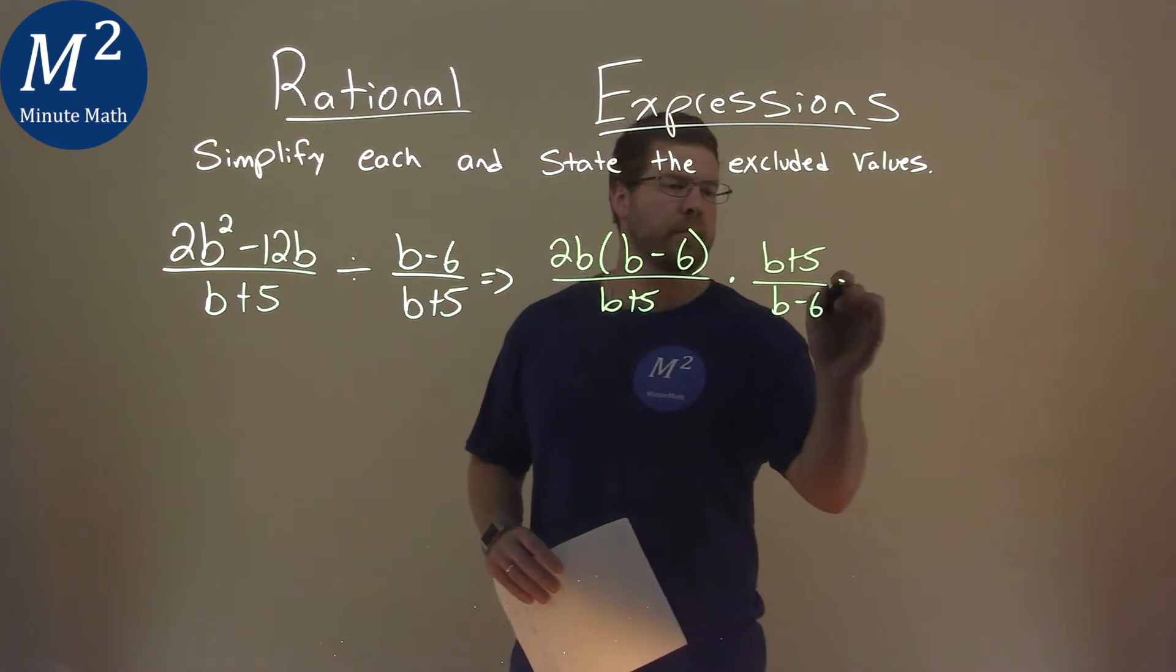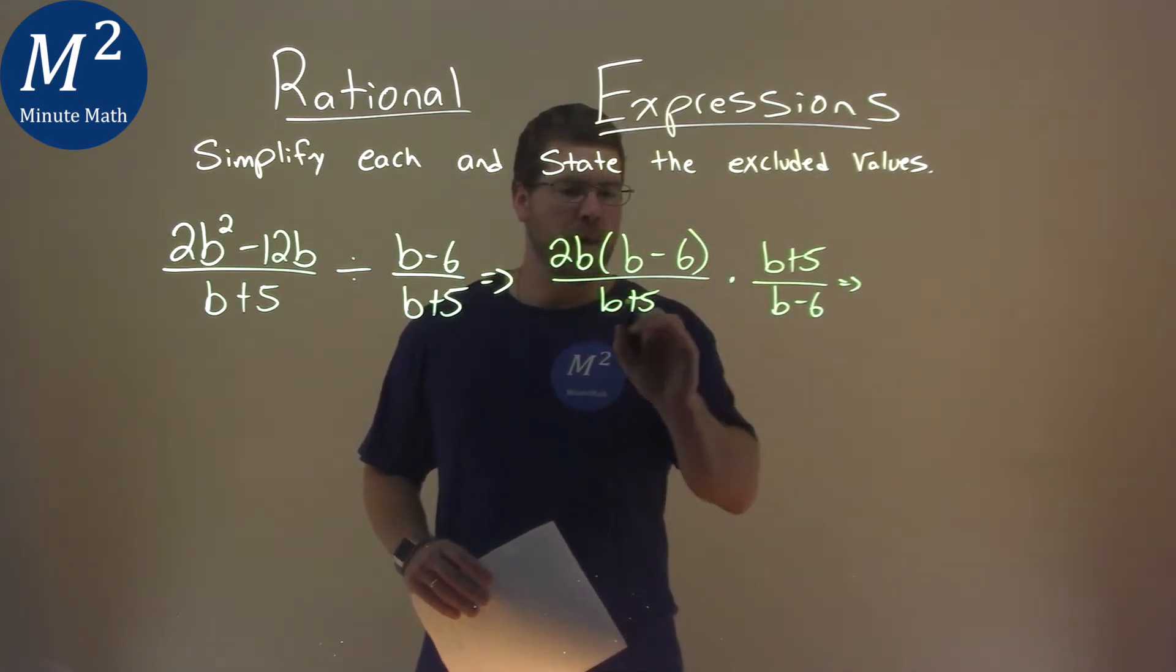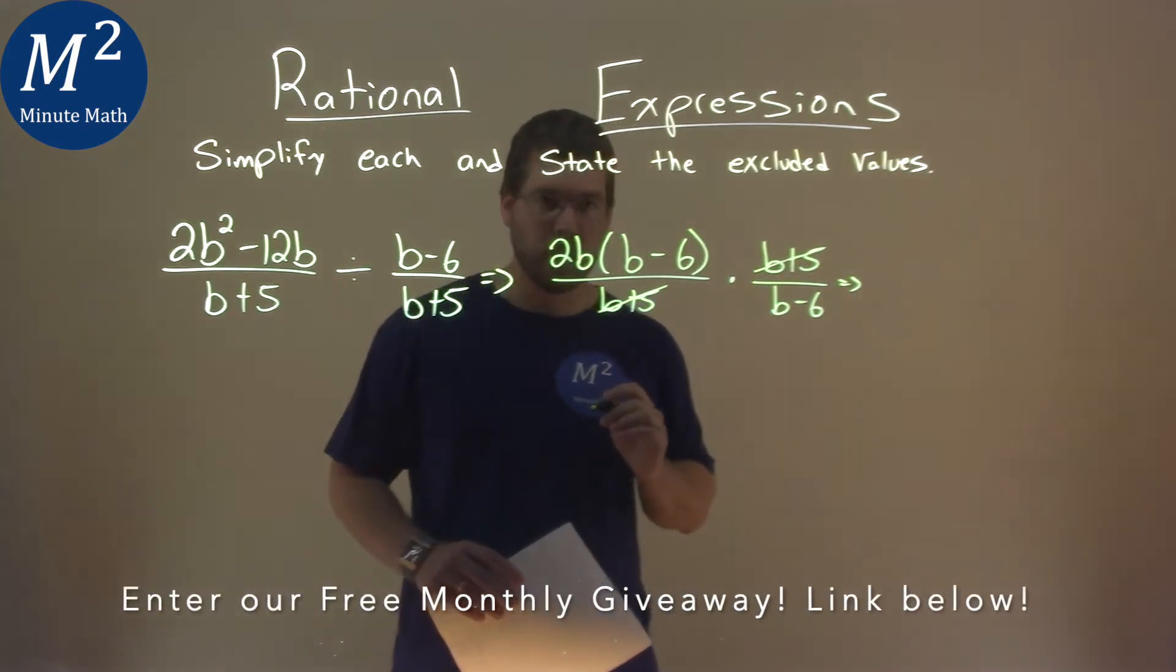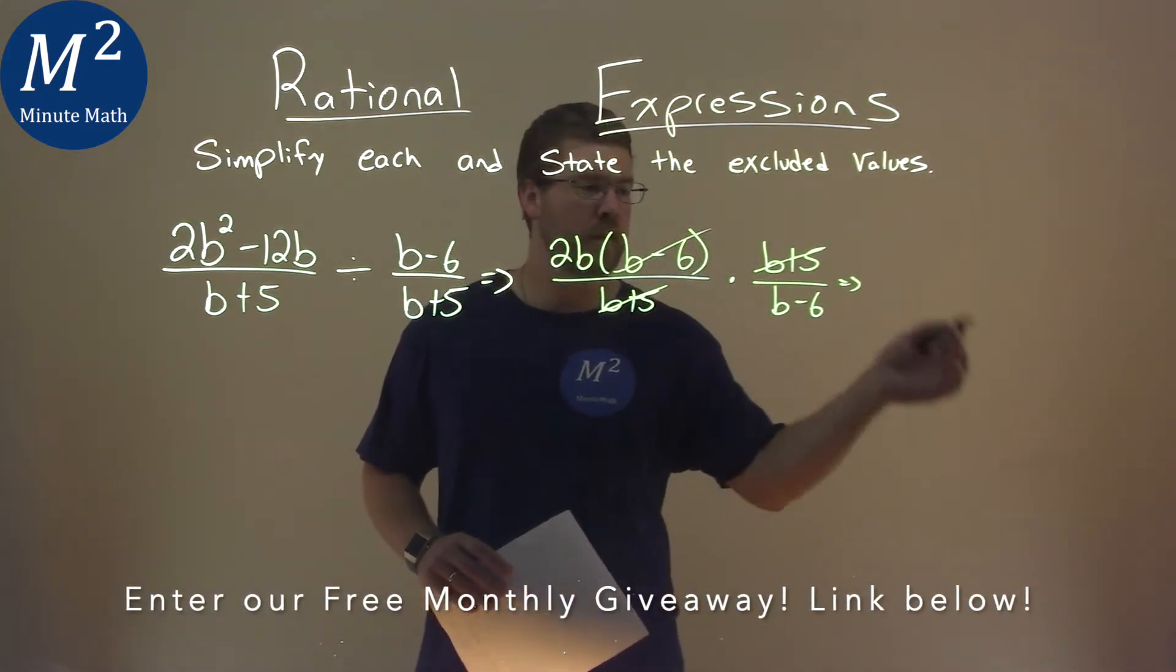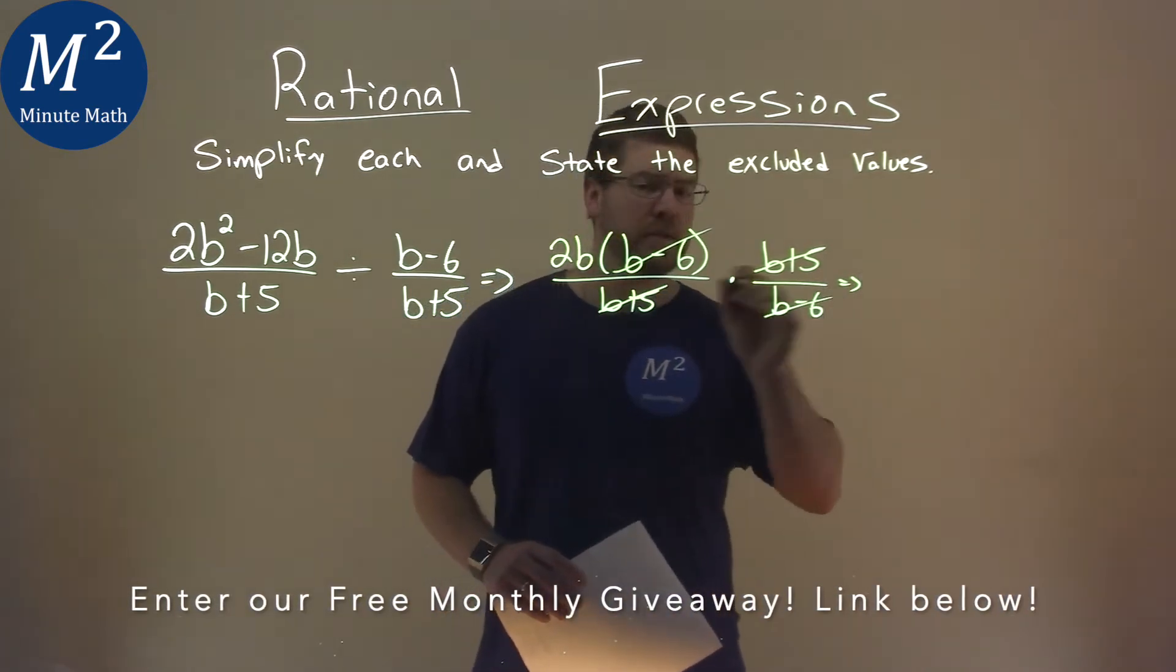Well, this is nice now, because now we can go cancel out some things. A b plus 5 in the denominator, and b plus 5 in the numerator. b minus 6 in the numerator, b minus 6 in the denominator. So what's left? Just that 2b.